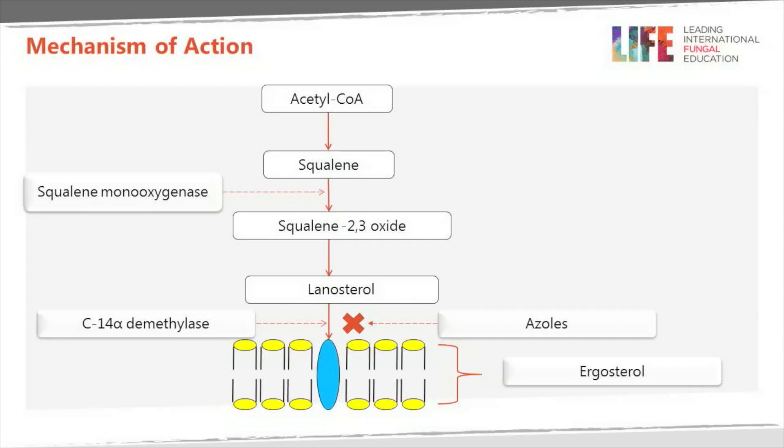This is a diagram of that pathway, starting with acetyl-CoA — part of the Krebs cycle — through squalene, squalene 2,3-oxide, to lanosterol. All of the azoles operate at the step just after lanosterol. Ergosterol finally ends up surrounding the fungal cell in its membrane — different from the cell wall; it's a cell membrane around the fungal cell.